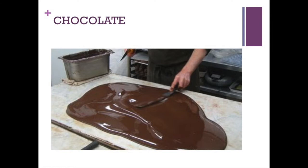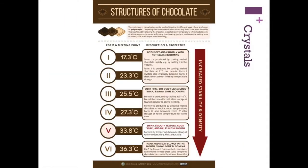Once cooled, it was mixed back in with the warm chocolate reserve, placed on a sheet of hard plastic, which was curled into a cylinder and left to harden. This chart shows all six crystals that form in chocolate. Our target crystal is number 5. You can see each melting point and the qualities of chocolate that are produced from each type of crystal.